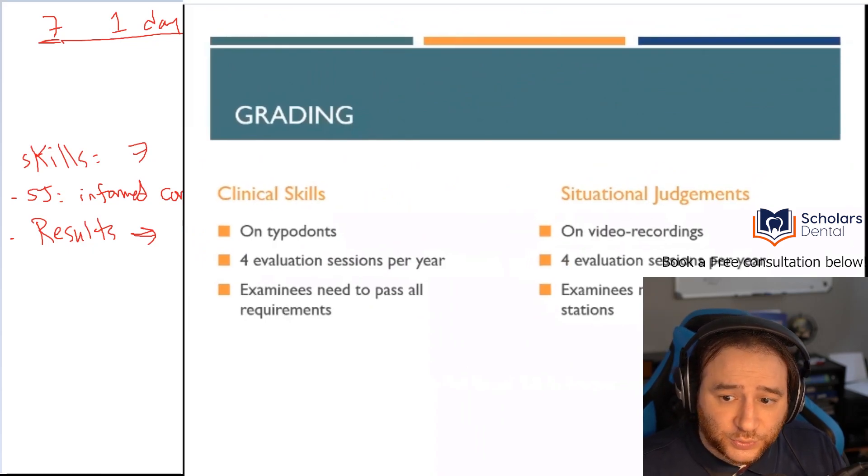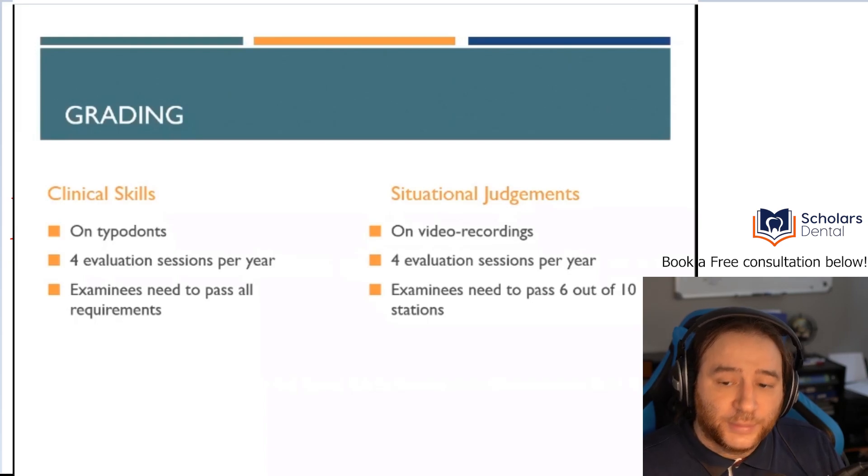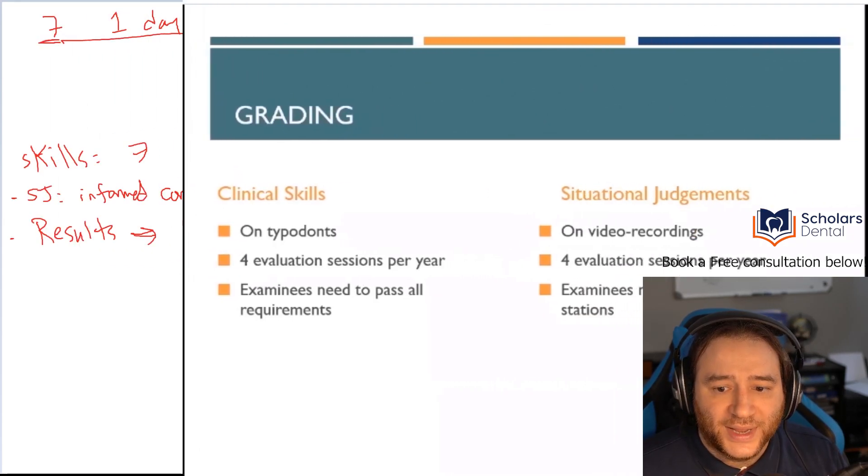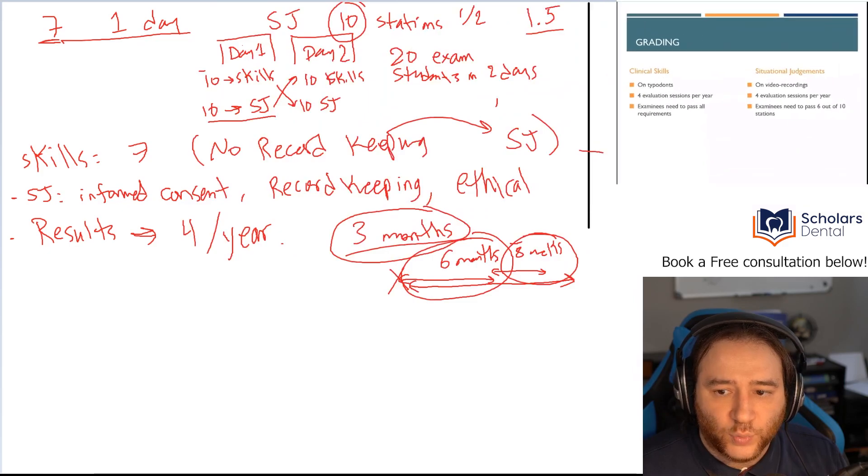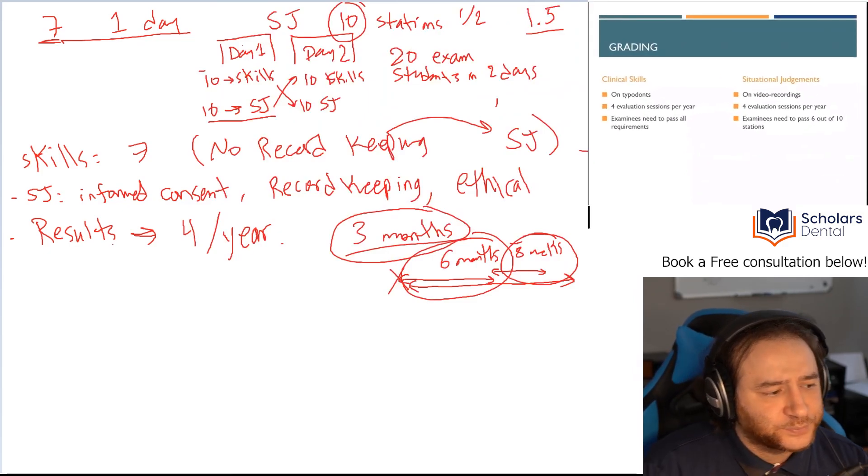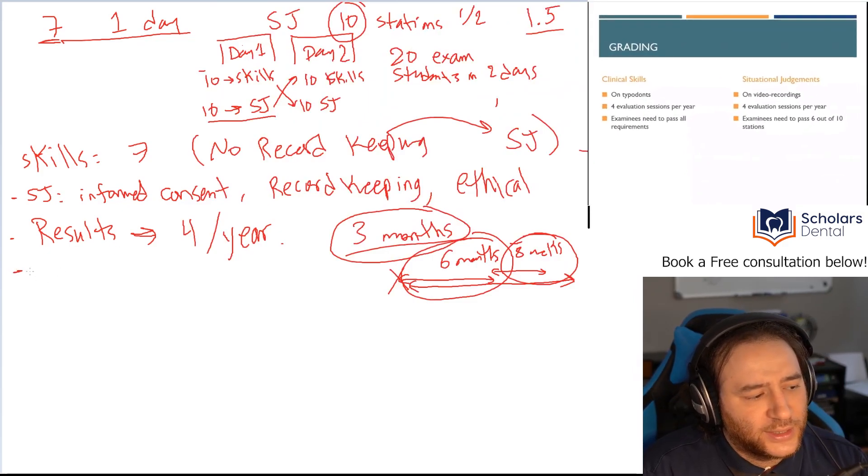Now, with the situational judgment, you're going to be recorded on video. They're going to evaluate that. And it's also four evaluation sessions per year. So four results per year. And you have to pass six out of the ten. So you don't have to pass them all. And this is a big point now. What makes you pass the exam? In NDECC, or in the eight skills, must pass all.